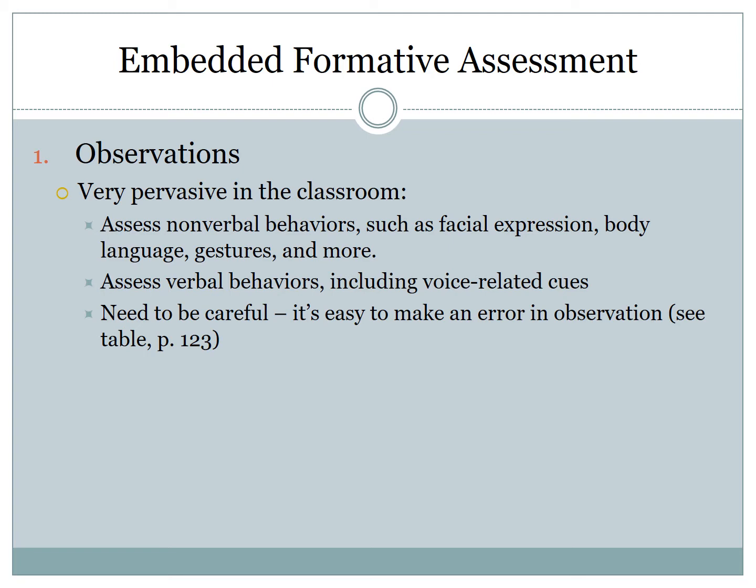You might also assess verbal behaviors, including voice-related cues — whose voice is going up, who's showing anxiety or stress, who's relaxed and happy. As we get better at making judgments about these nonverbal and verbal behaviors, we grow almost complacent. But be cautious, because approaching these from our own framework makes it easy to make mistakes. Your book has a nice table of ways to make errors in observations on page 123 — for example, observer bias, where you might over- or underestimate a student. Observation is a good tool but isn't without its dangers.